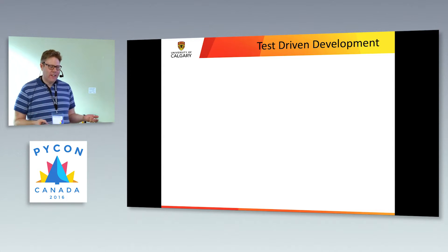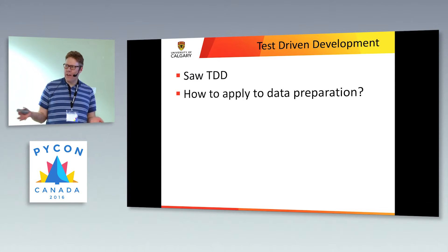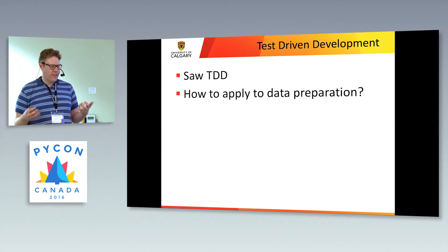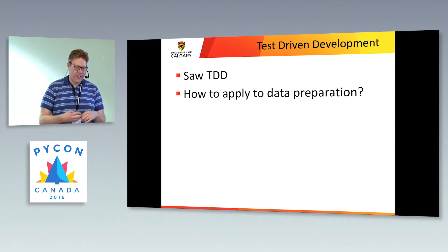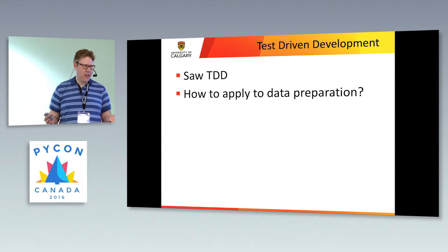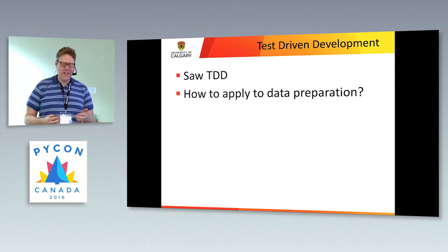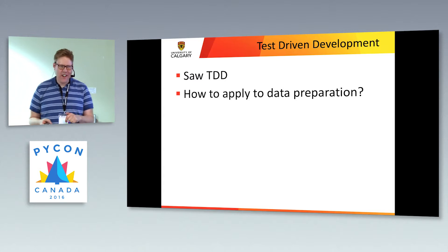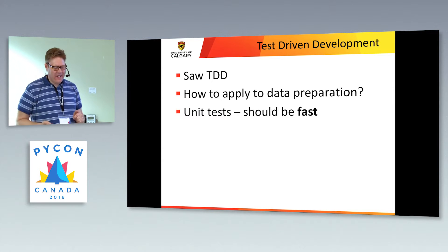When I heard about test-driven development and testing, I saw it but wasn't quite sure how to apply it to data preparation. So I created some tests to test my data code for a project, and I said, 'Oh, this is great, I'm doing unit testing.' Then I ran my little test suite and it takes actually longer than the length of this talk to run. Then I read somewhere that unit tests should be fast and you should just run them as you go — so how do I reconcile this?